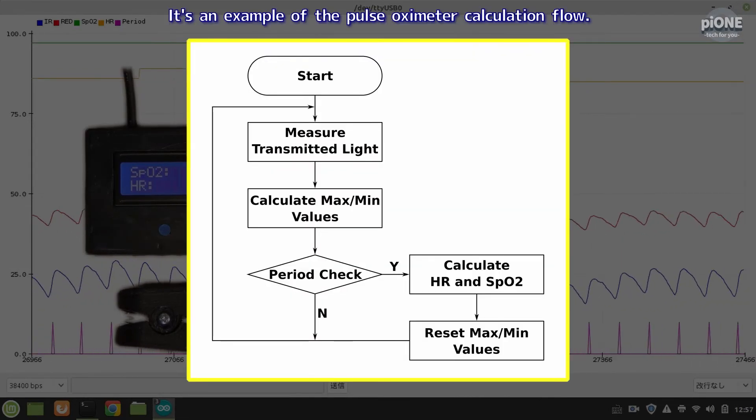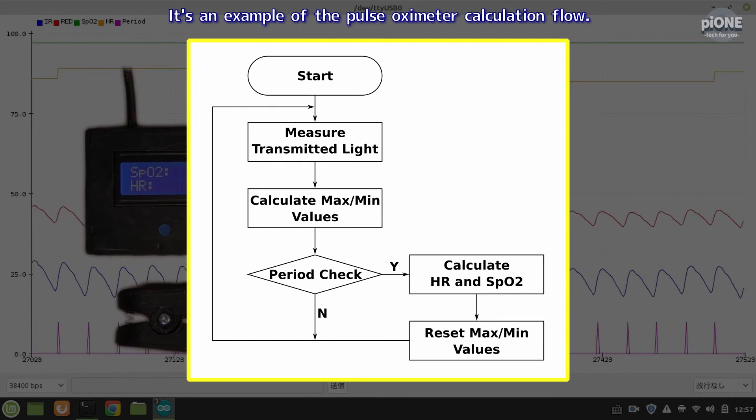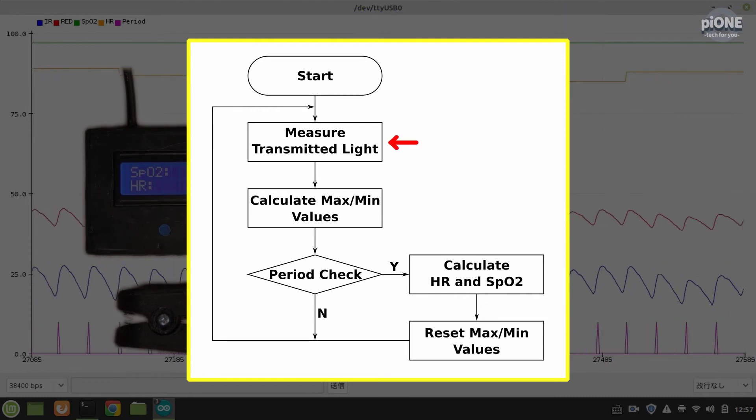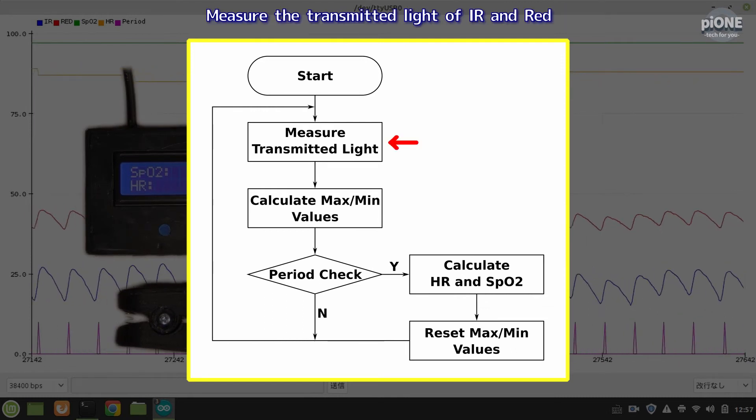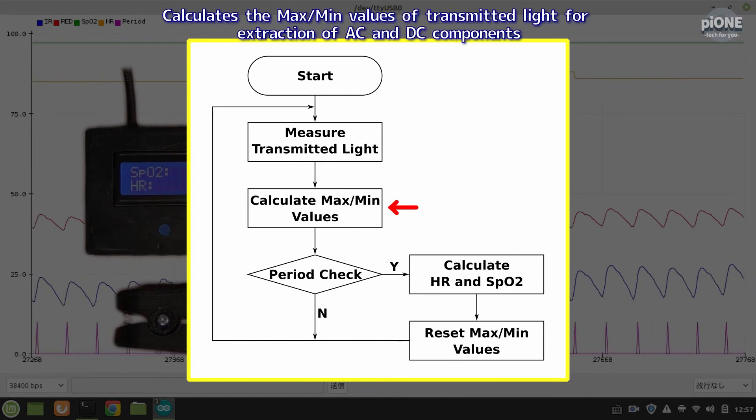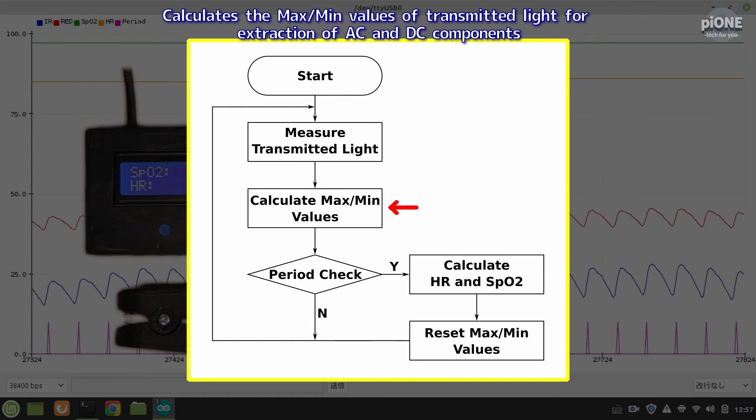It's an example of the pulse oximeter calculation flow. Measure the transmitted light of IR and red. Calculate the max per minute values of transmitted light for extraction of AC and DC components.